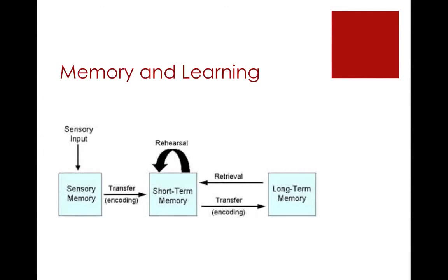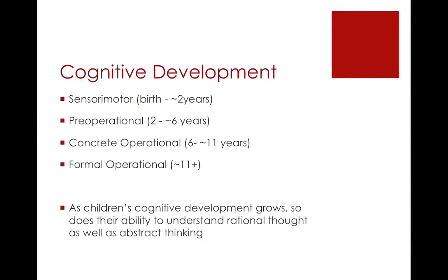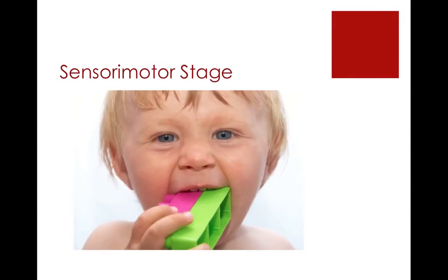Piaget was a strong advocate of cognitive learning and created a stage model of cognitive development to explain the differences between children's minds through their growth. As a child's cognitive development grows, so does their ability to understand rational thought and abstract thinking. The first is the sensorimotor stage, from birth to two years. Children are egocentric, do not have conservation, and explore with their senses — which is why you see children putting things in their mouths. They can't perceive something if it's gone, and if parents leave the room, they get very upset because they think they're gone.